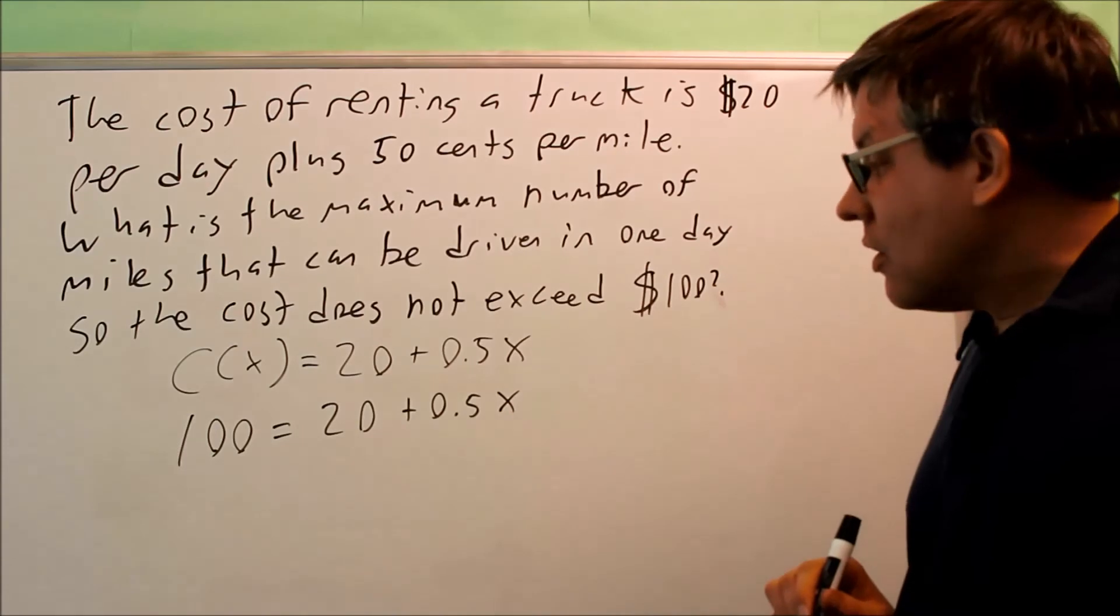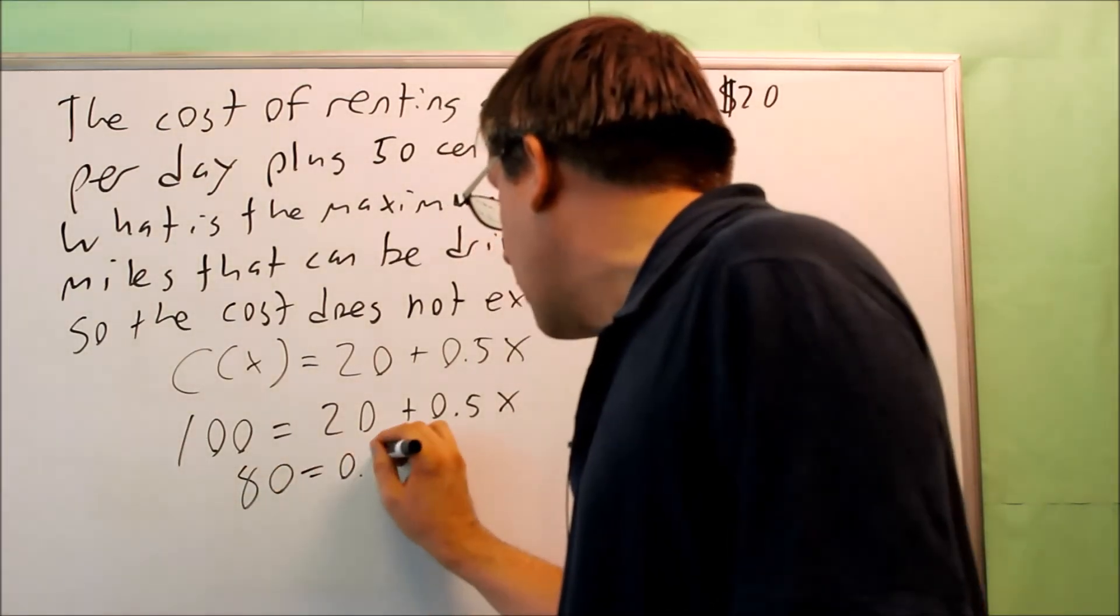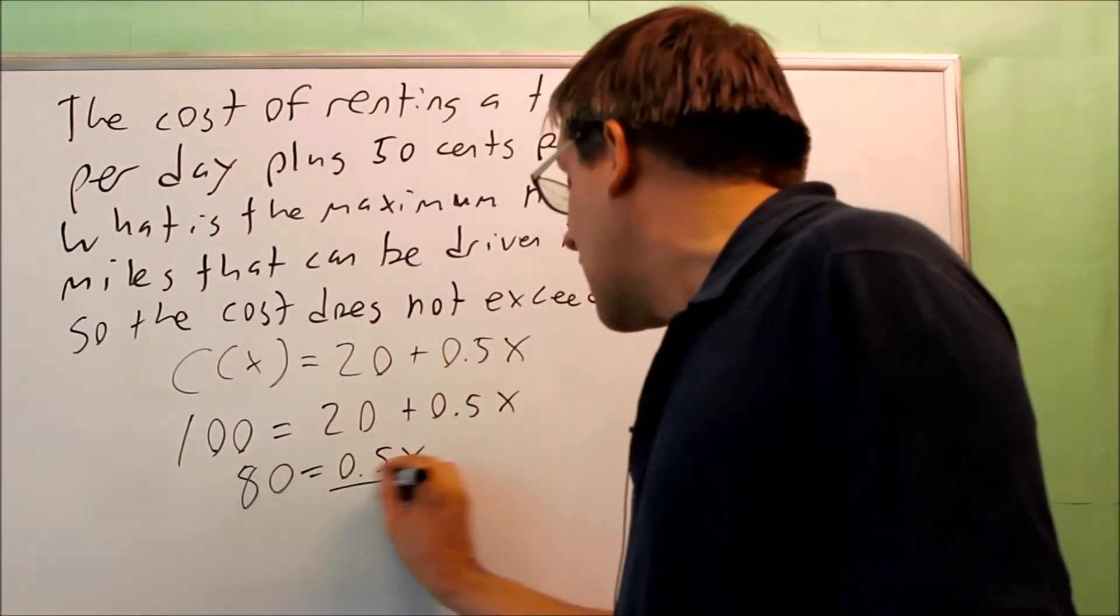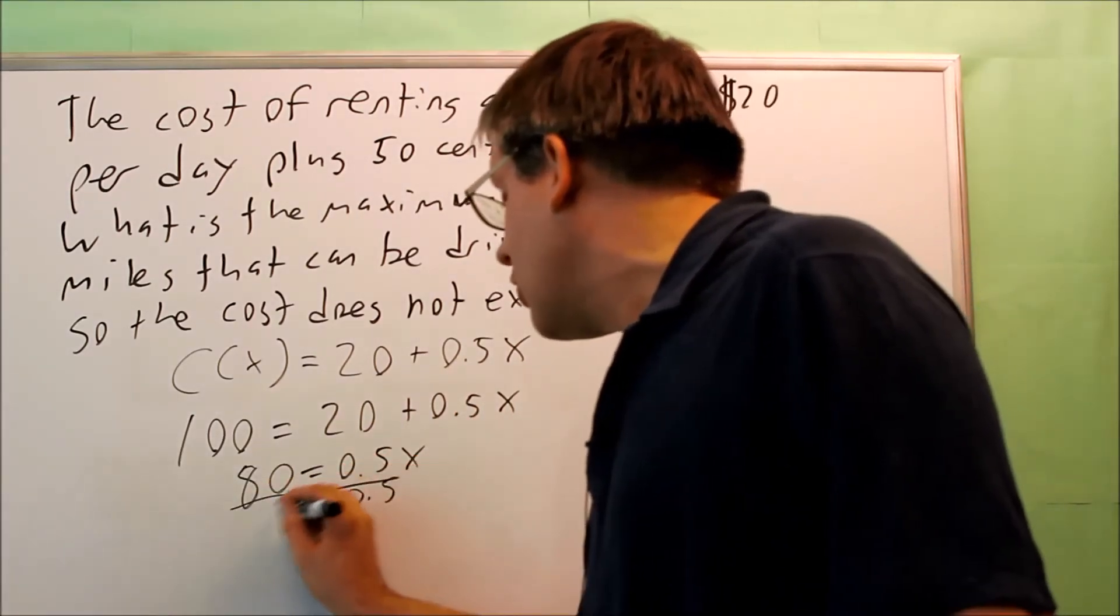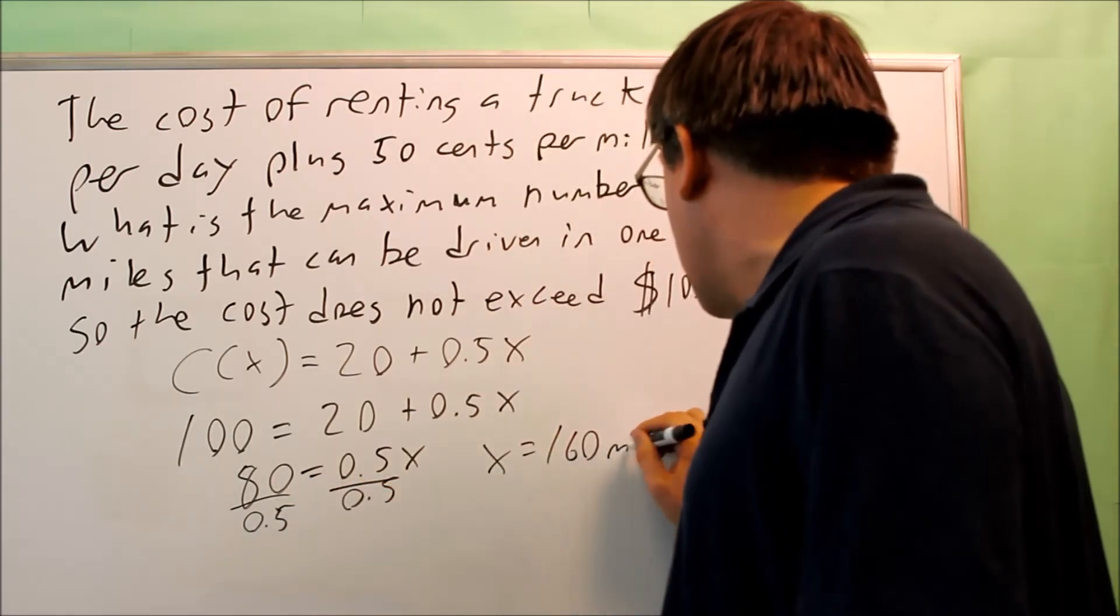100 in for my C. Okay, so if I subtract 20 from both sides, 80 equals 0.5X. You're going to divide both sides by 0.5, and if you do, you're going to get X is equal to 160 miles.